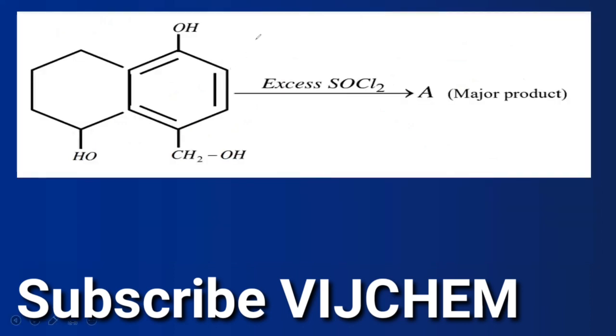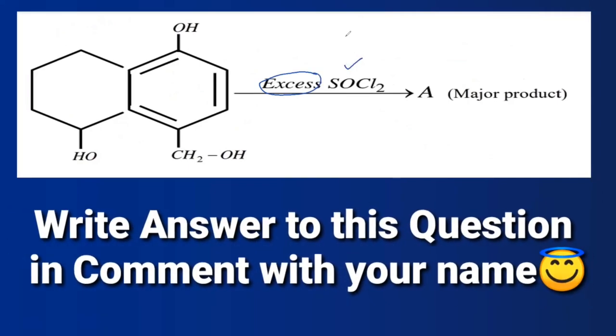See here, in this question you are given excess SOCl2. Whenever you have SOCl2 on the arrow, chlorination you will do. But here you have three OH groups—OH here, OH here, OH here. The question is: excess is given, so how many will you replace and where will you replace?